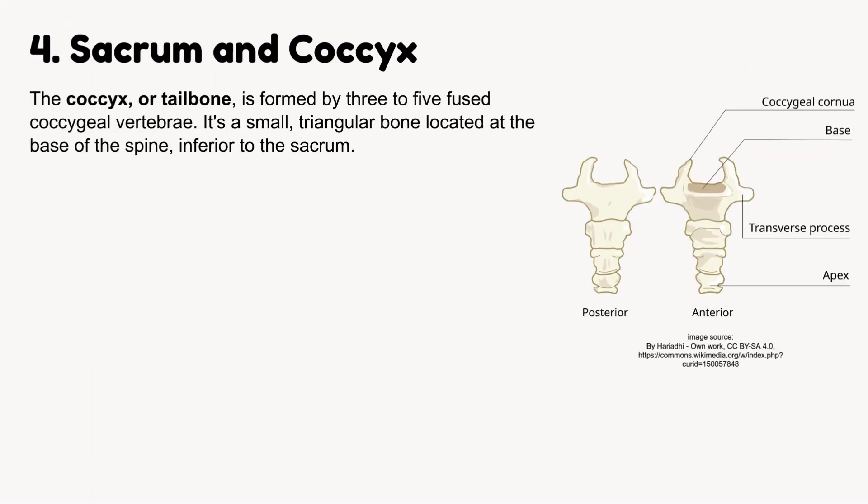The coccyx, or tailbone, is formed by three to five fused coccygeal vertebrae. It is a small, triangular bone located at the base of the spine, inferior to the sacrum.